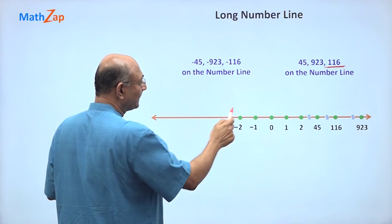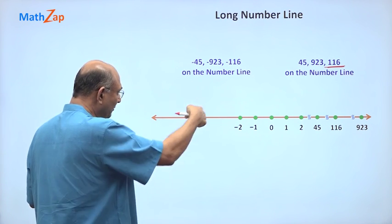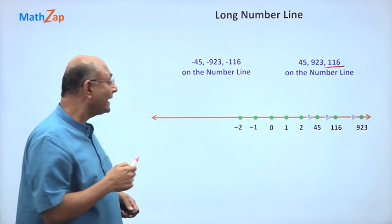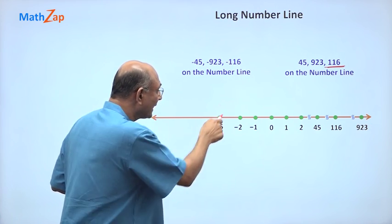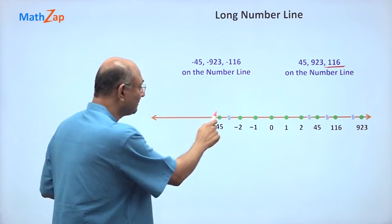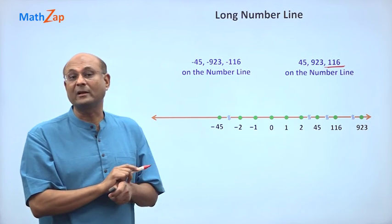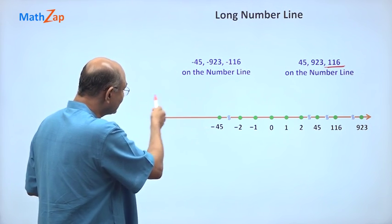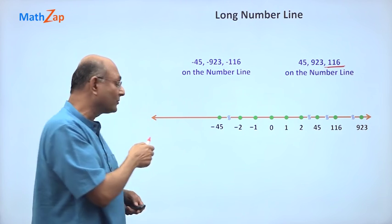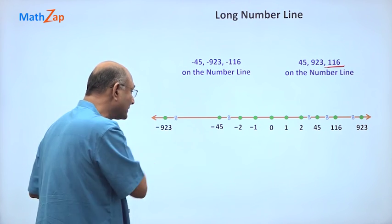I have minus 45. Minus 1, minus 2, minus 3, minus 4, minus 45 comes to the left. So I am going to put it here and I am going to put a break in the number line. What about minus 923? You know that minus 923 is going to be way down there. So I will put it there and put a small break.